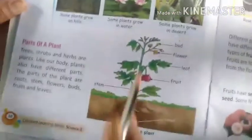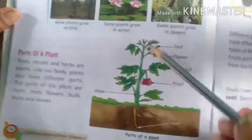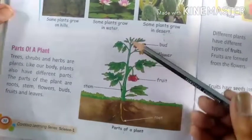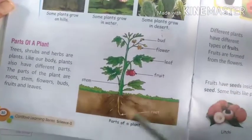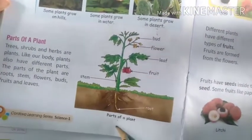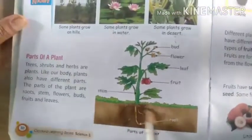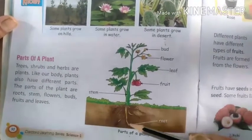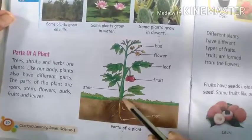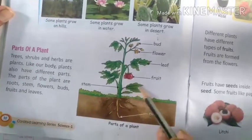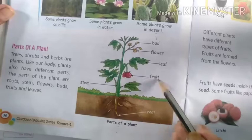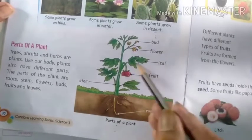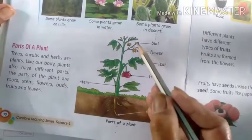You have learnt about plants. Now, these are the parts of the plant. You will draw a plant or paste one and name that picture. See — this is the soil. The root grows under the soil, then comes the stem, then leaves. This is the fruit, leaf, flower, and bud.